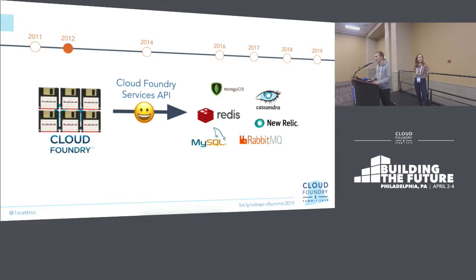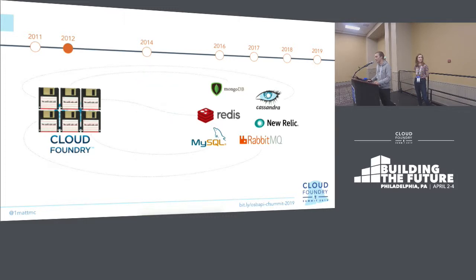It's a very simple specification which basically has five lifecycle API calls for provisioning, updating, deprovisioning, and then getting access to and revoking access to these backing services. So that was all good, and the world was happy. All of these applications can consume the backing services that they need.